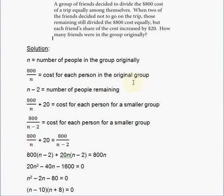N minus 2 represents the number of people remaining. After these two friends leave and decide not to go on the trip, there will be N minus 2 friends remaining.